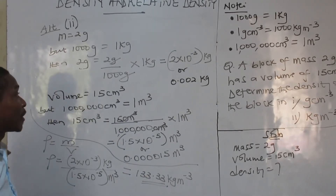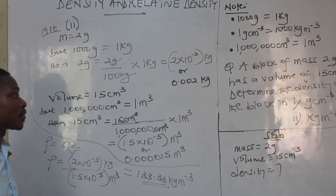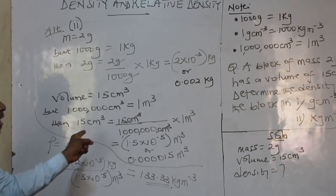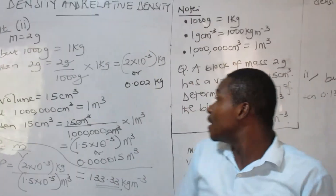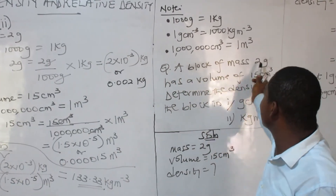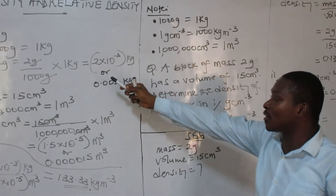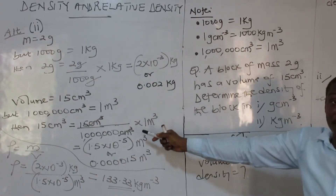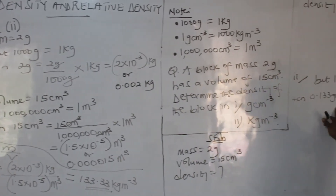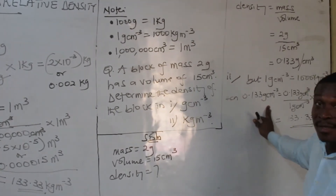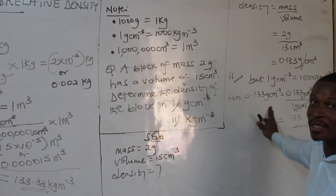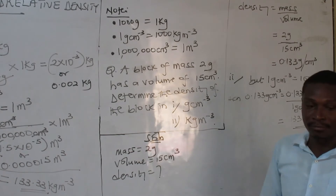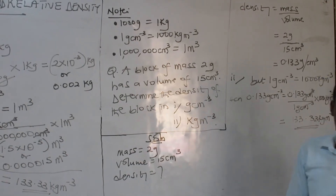This alternative method looks lengthy, but it's very good. Because when it happens that you just have to change one parameter, that is what you have to do. If you have to convert the mass or convert the volume, you know how to do it. Then it's also very easy. So either of the two methods you can employ.